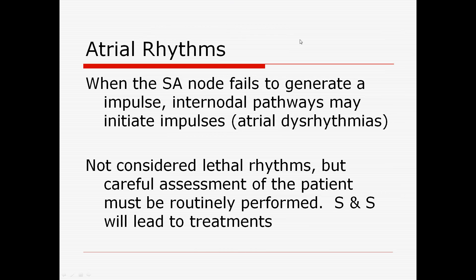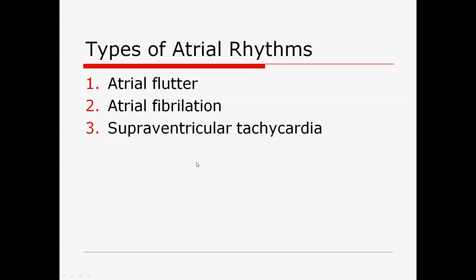Let's talk about atrial rhythms. When the SA node fails to generate an impulse, that's called an atrial dysrhythmia — it's not working correctly. Most atrial rhythms, pretty much all of them, are not a lethal rhythm, but you need to assess the patient carefully to find out if we need to do something. Signs and symptoms of the patient will lead to the treatments. Remember — check the patient, are they tolerating the rhythm? Let's treat the signs and symptoms. Types of atrial dysrhythmias: we have atrial flutter, atrial fibrillation, and supraventricular tachycardia, SVT.